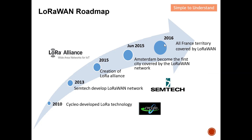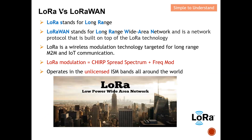This actually happened in two years — can you imagine the challenge of covering the whole of France? LoRa actually took a very short time to achieve full French territory coverage. Now, what is the key difference between LoRa and LoRaWAN? LoRa actually stands for Long Range. LoRaWAN stands for Long Range Wide Area Network, and it is a network protocol built on top of LoRa technology.